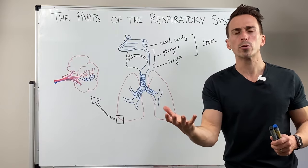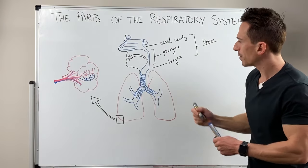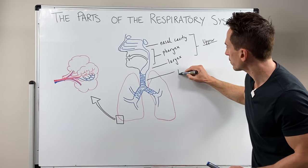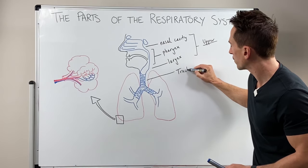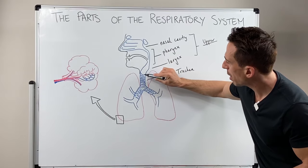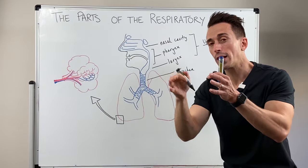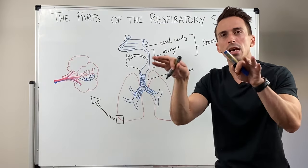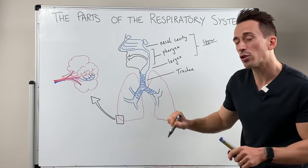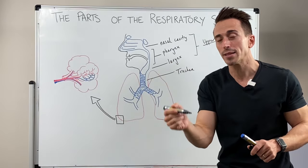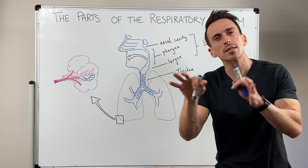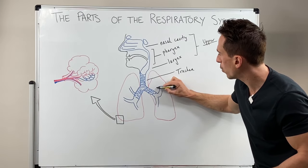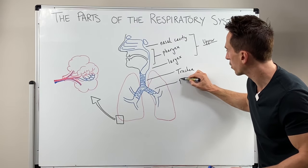So what do lower respiratory tract infections refer to? Well, we then go to the trachea. Air passes through the trachea and then the trachea splits — this is known as a bifurcation. It bifurcates left and right, and once it bifurcates it turns into the left and right main stem bronchi — like the stem of a tree. These are called bronchi.